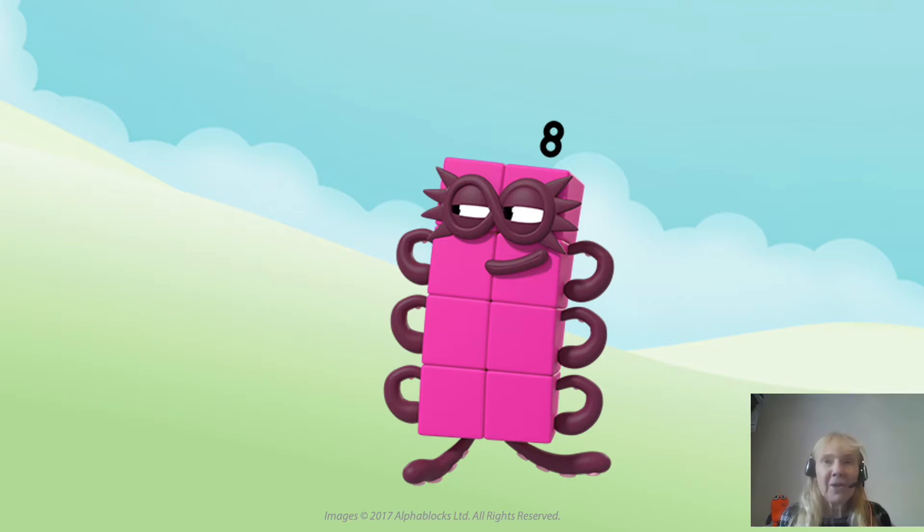Octoblock does lots of things. He can knit super quick. Why can he knit super quick? You're right, because he's got eight arms. He can cook a banquet with eight meals. You might want to later just have a think about all the things that Octoblock can do because he has eight arms and eight blocks.